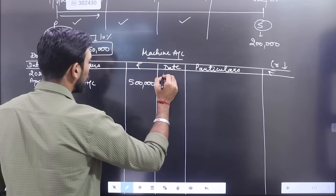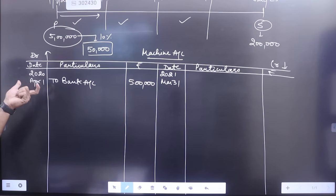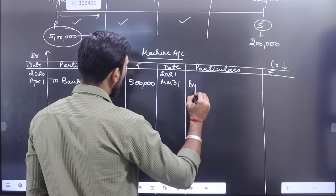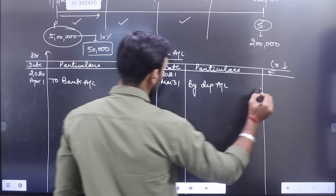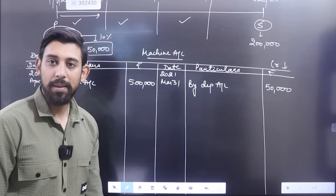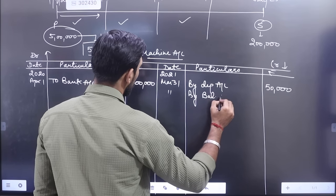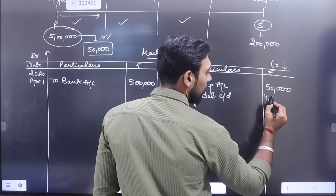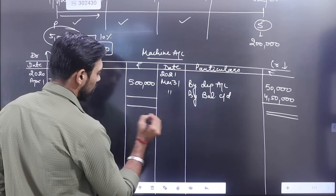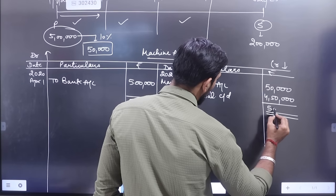Year end came - 2021 March 31st. Machine was bought in April, March came - used whole year - so whole year depreciation. By depreciation account: 50,000 rupees - first year depreciation applied. Balance carried down: 5,00,000 minus 50,000 = 4,50,000. Account closed. Total comes to 5,00,000 on both sides.